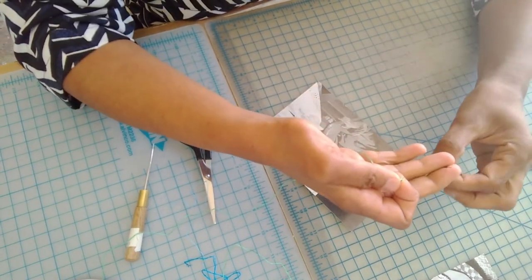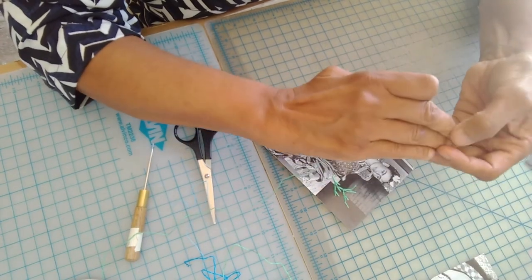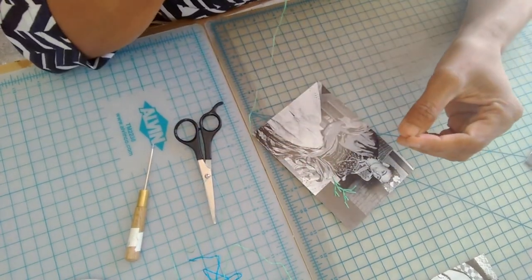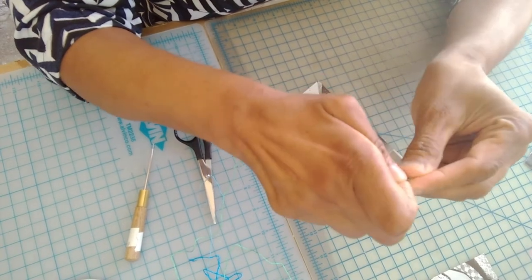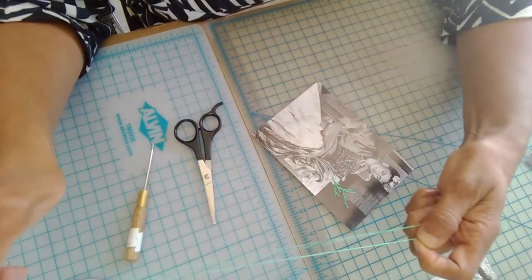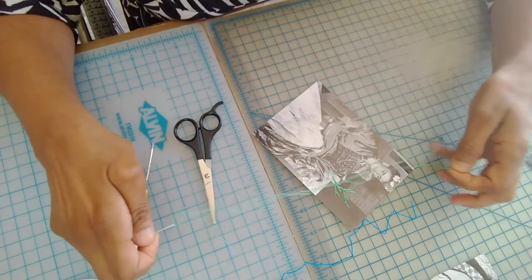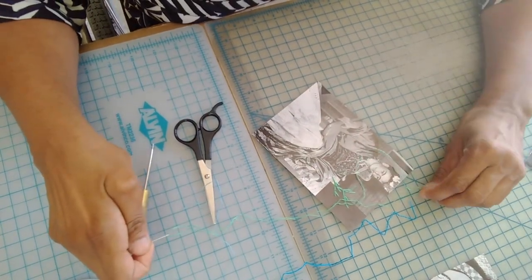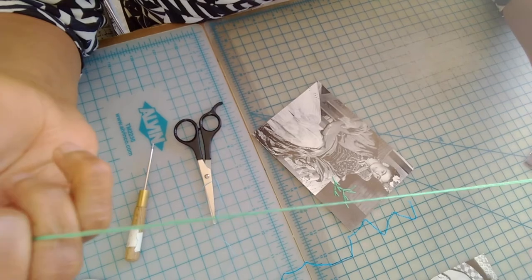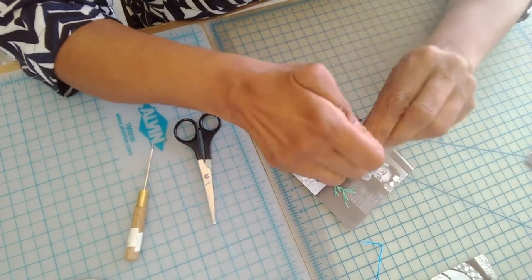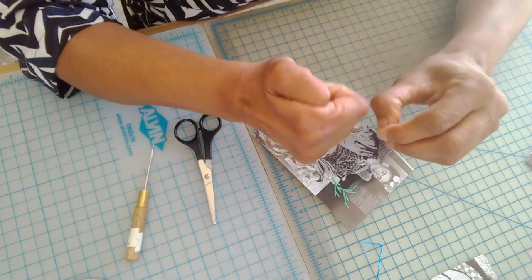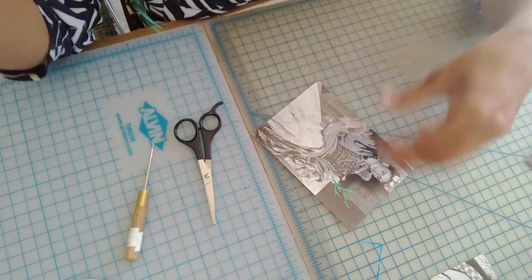I'm going to put them in my needle. And I'm going to double them, double it. So double the threads. You have four threads, okay, to embroider with. And I'm going to knot it.